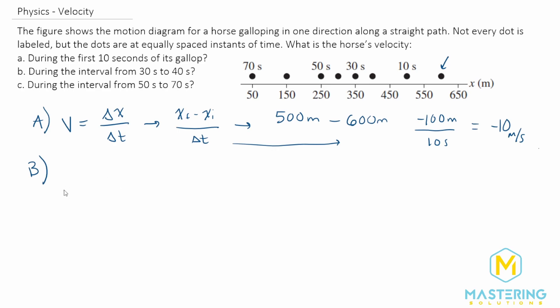So the change in time, or t final minus t initial, is going to be 40 seconds minus 30 seconds. Delta x, or x final minus x initial,